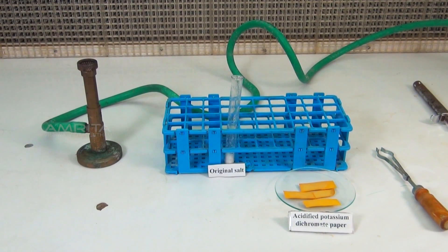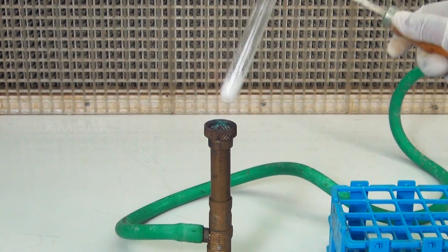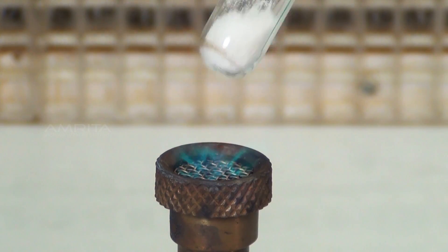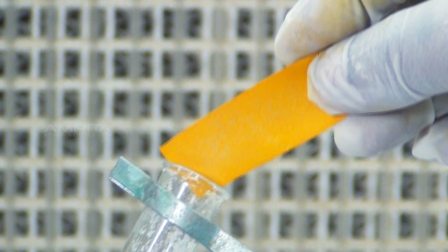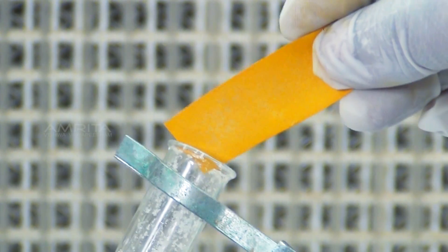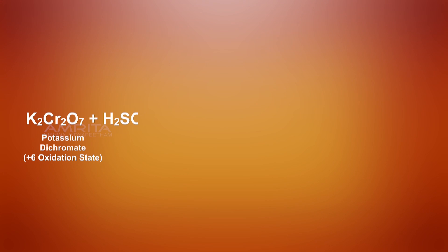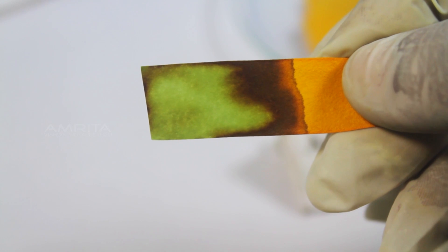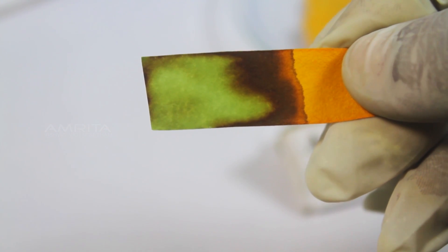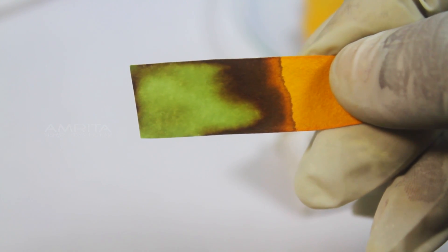Procedure: Take a small quantity of the salt in the test tube and heat it over the Bunsen burner. On heating, sulphite undergoes decomposition to evolve colourless sulphur dioxide gas with a characteristic suffocating smell. Place an acidified potassium dichromate paper over the mouth of the test tube. In the presence of acid, sulphur dioxide reduces chromium in potassium dichromate from +6 to +3 oxidation state. Chromium in the +3 oxidation state gives green colour to the acidified potassium dichromate paper.